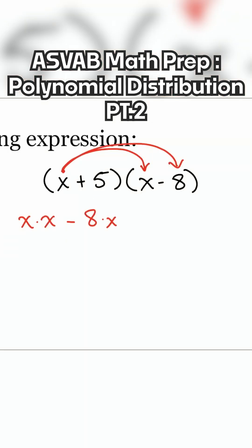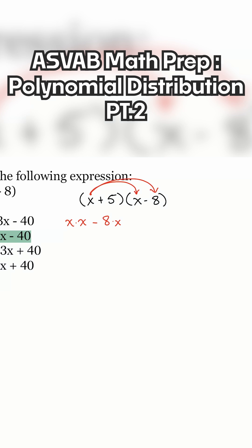Before I continue, everybody, make sure everything from one parentheses multiplies with everything from the other. This x needed to multiply with the other x. Also needed to make sure that the x multiplied with the negative eight. Now I'll continue.